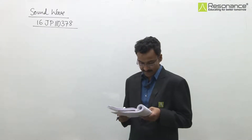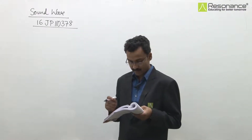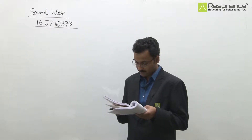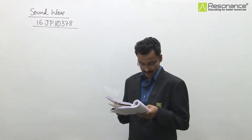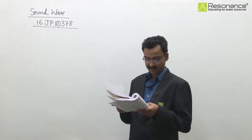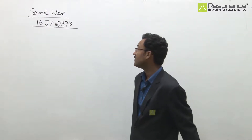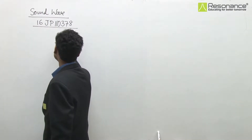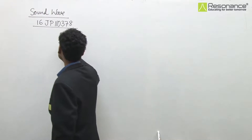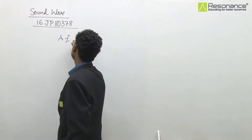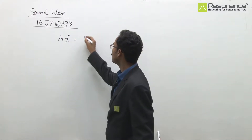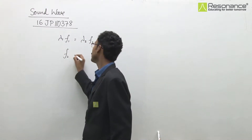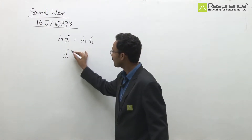In this question, the frequency and wavelength of a man's voice are given, and the wavelength of a child's voice is also given. The child's voice frequency is asked. Since the speed of sound remains constant, lambda times f will be constant, so we can set up an equation for f2, the frequency of the child's voice.